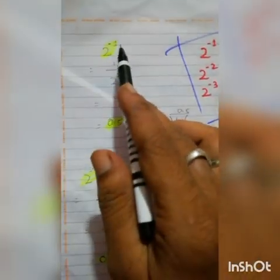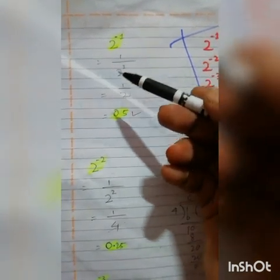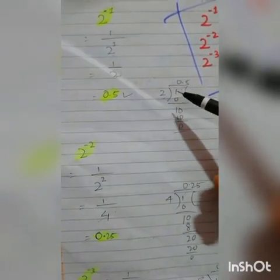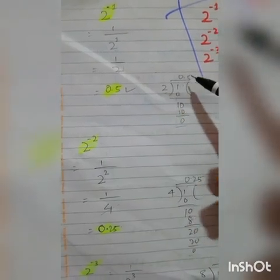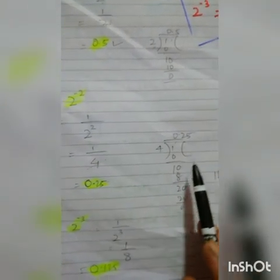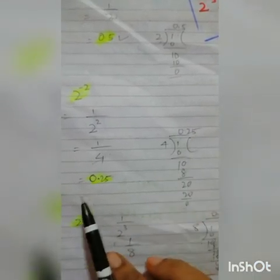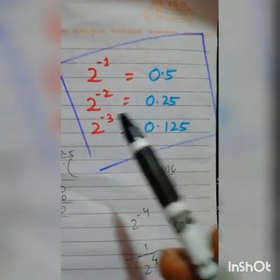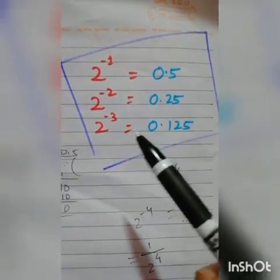How do 0.5 and 0.25 come? If the power is 2⁻¹, convert to positive: it means 1 divided by 2¹ = 1/2 = 0.5. Similarly, 2⁻² means 1/2² = 1/4 = 0.25. And 2⁻³ means 1/2³ = 1/8 = 0.125. Remember these values: 2⁻¹ = 0.5, 2⁻² = 0.25, 2⁻³ = 0.125.